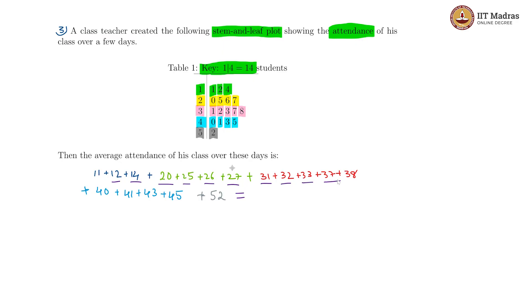Plus 37 is 268, plus 38 is 306, plus 40 is 346, plus 41 is 387, plus 43 is 430, plus 45 is 475, plus 52 is 527.